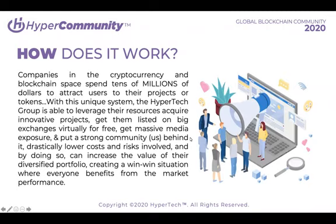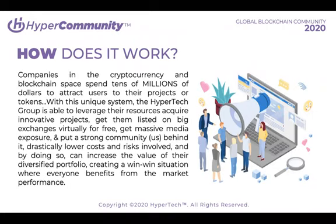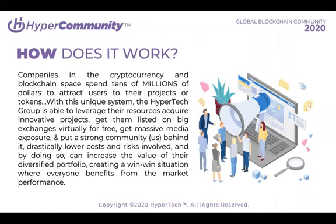So how does this whole opportunity work? Users and community are everything. The most successful companies in the world — Facebook, Amazon, Google — why are they so successful? Because they have a powerful array of products and services, but most importantly, they have people using them — a consistent and loyal user base. Companies in the crypto and blockchain space are no different. To achieve mass adoption, you need users. And these companies are willing to spend tens of millions of dollars because they know just how valuable users are.